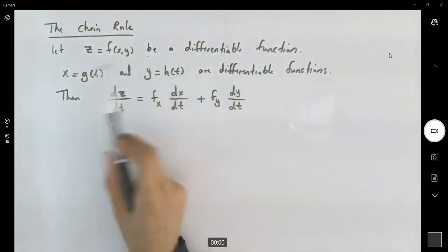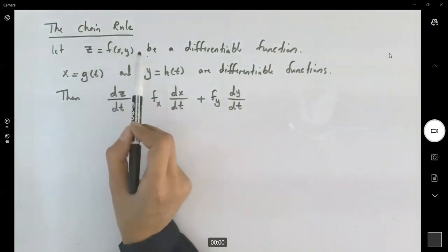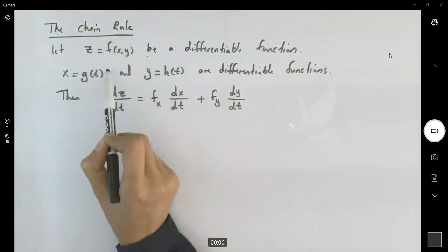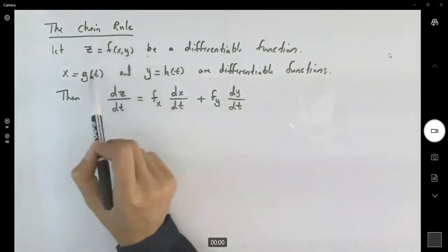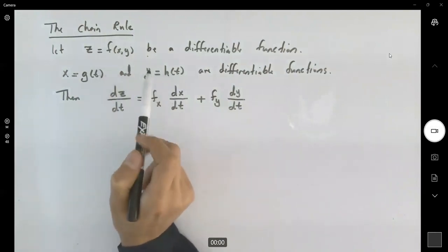This is one way to find the derivative of z with respect to t. You can also substitute x and y into the function and just directly take the derivative. You substitute g and h into the function, you eliminate x and y. You only have t. Let's go over one example.